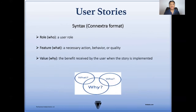The most popular syntax for user stories is formally called the Connextra format. It typically includes the role, the feature, and the value, which is better known as the who, what, and the why. The role, or the who, is the user or the customer. The feature, or the what, is a necessary action, behavior, or quality. And the value, or the why, is the benefit received by the user when the story is implemented.